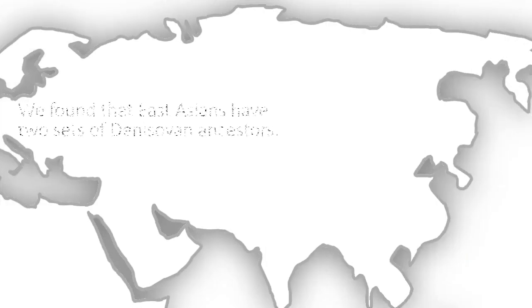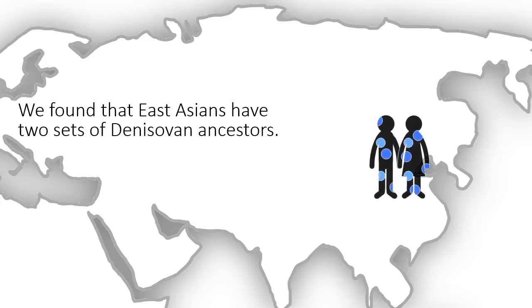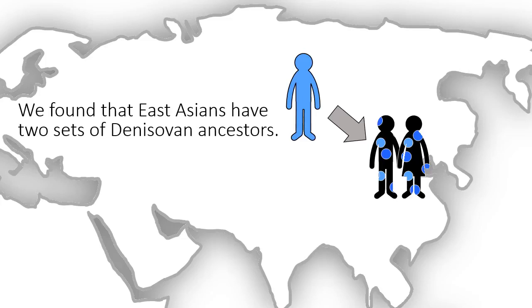In our study, we discovered that East Asians inherited DNA from two groups of Denisovan ancestors. One ancestral group was closely related to the sequenced Denisovan from Siberia, whereas the other ancestral group was distantly related.